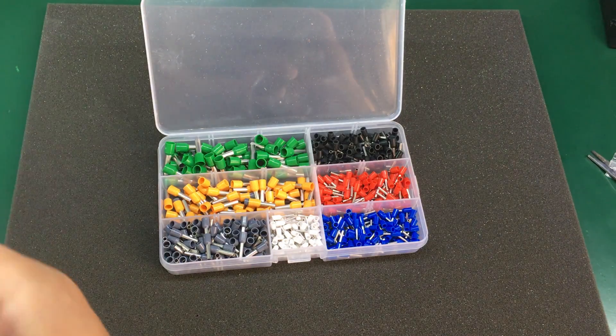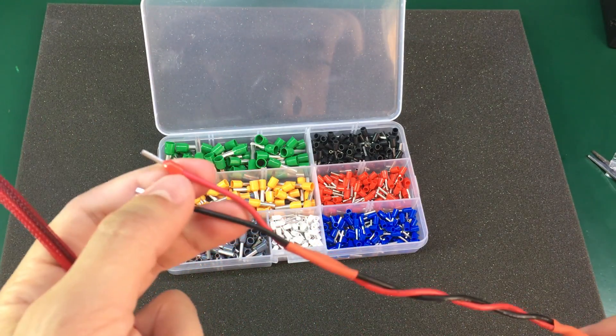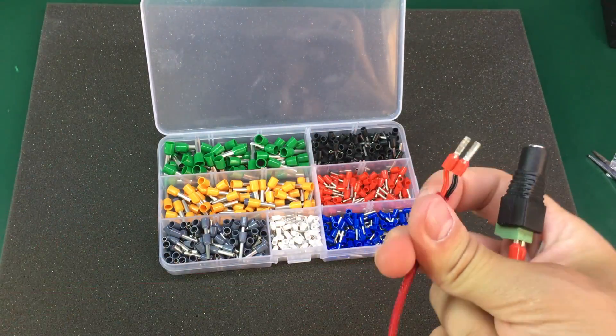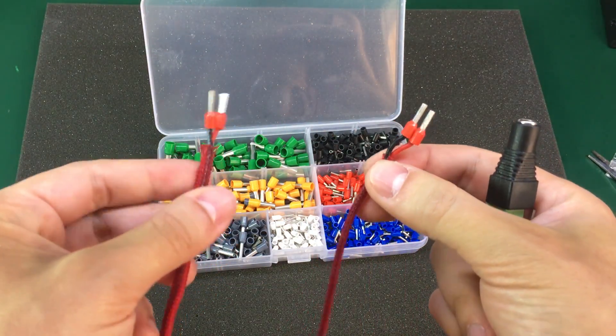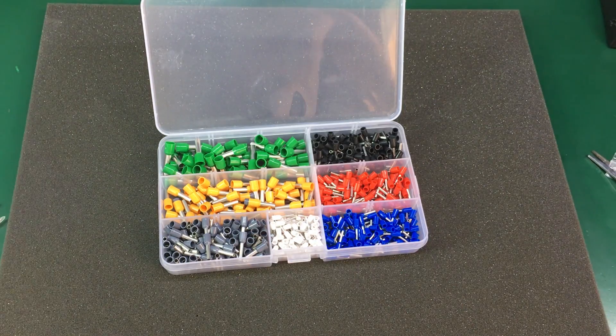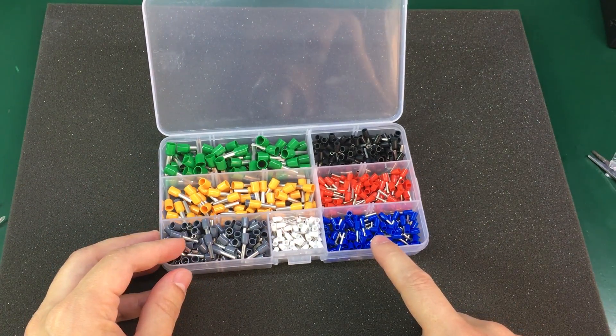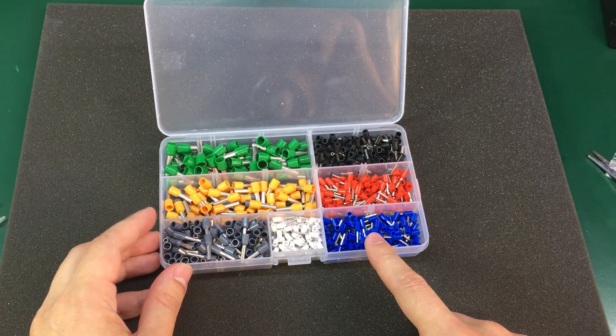Let me show you a couple of examples. Here I have the ends of these cables crimped with ferrules. And on this small patch cord as well.